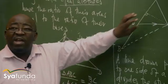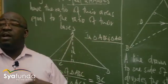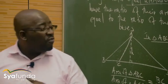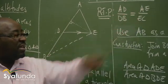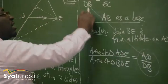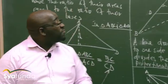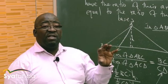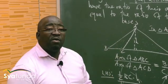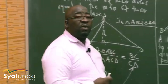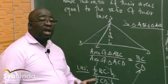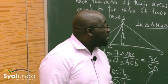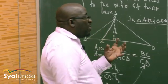Triangles with equal altitudes have the ratio of their areas equal to the ratio of their bases. This will be equal to AD over DB. Remember what we want to prove: AD over DB equals AE over EC. All that I was trying to do was to get AD over DB and prove it equals the other ratio. That's equation one.